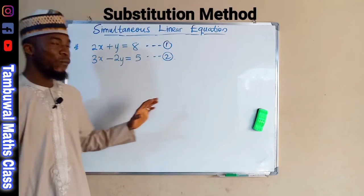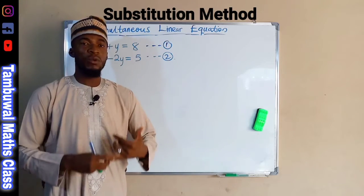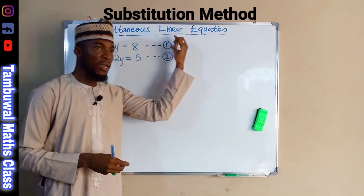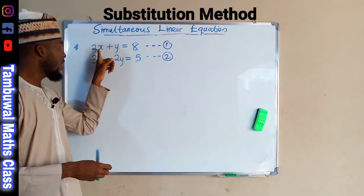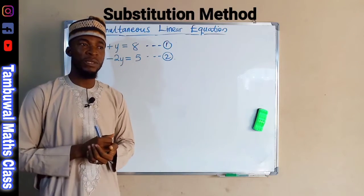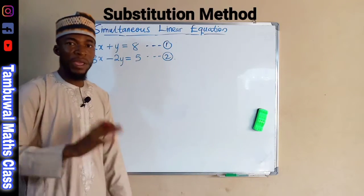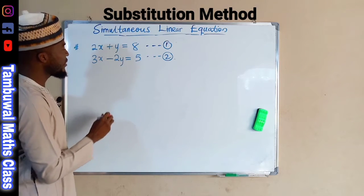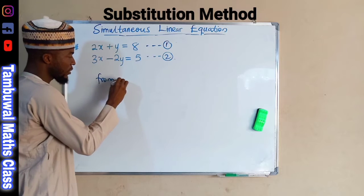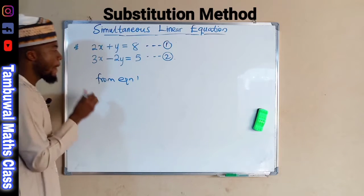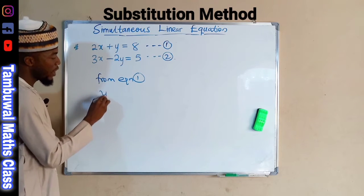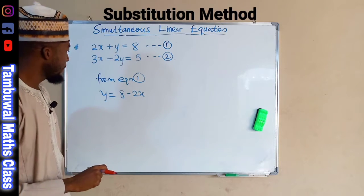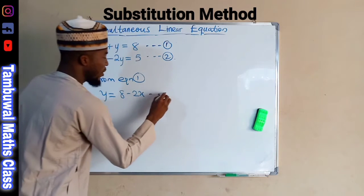In substitution, first you have to decide which equation to use. If you decide to use equation 1, you have to make either x or y the subject of that equation. Making y the subject is a little bit easier, so from equation 1 we can see that y is equal to 8 minus 2x. This is our equation number 3.